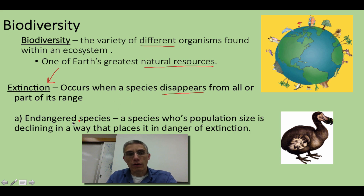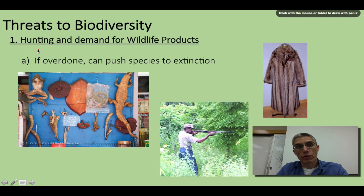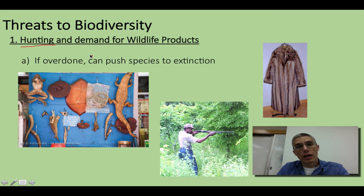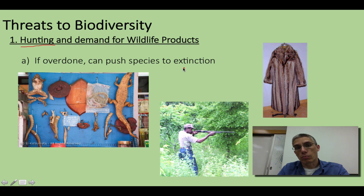Before an organism goes extinct, oftentimes we will classify it as being endangered. An organism that is considered endangered is a species whose population size is declining, usually really rapidly, in a way that places it in danger of extinction. There are many threats to biodiversity, but typically one of the first that comes to most people's minds is the idea of hunting, which can put great demand on various wildlife. If you hunt to the extreme, you can definitely push many species to the brink of extinction.